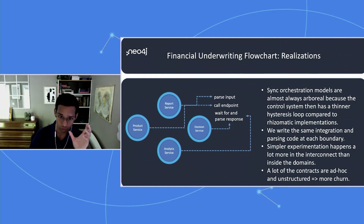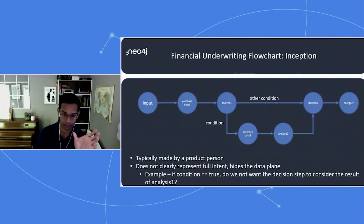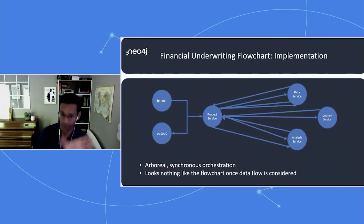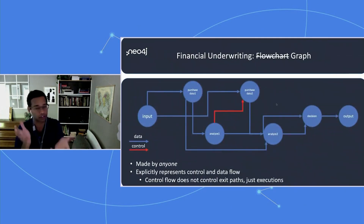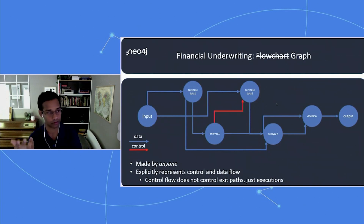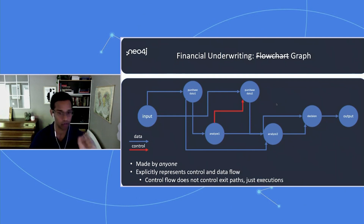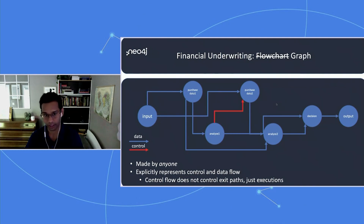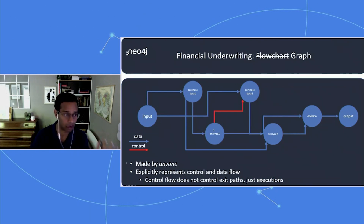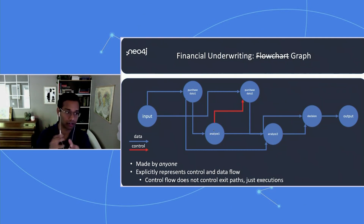With these realizations, if we looked at the flowchart in a different way — instead of as an implementation, as a graph — we start to see something more interesting. Looking at it in two layers, the data plane and the control plane, it becomes much more intent-revealing and explicit. We can see exactly where data flows from which bounded context to which bounded context, and we can separate data flow from control flow.